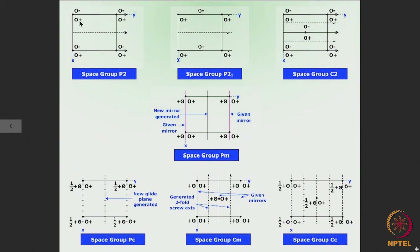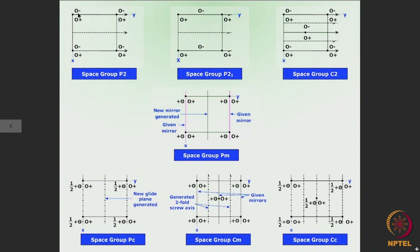Suppose O plus indicates a group of atoms attached to each and every lattice point. If the lattice has got a twofold rotor through these lattice points along the y direction, then because of the twofold rotor at each lattice point, the given group of atoms will generate another group of atoms as shown here. It is at a different level — that is why it is written O minus.